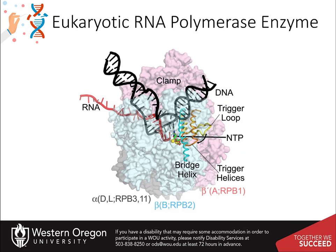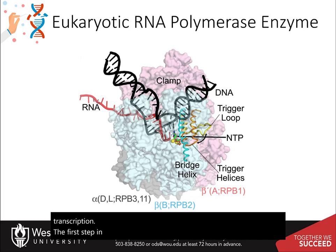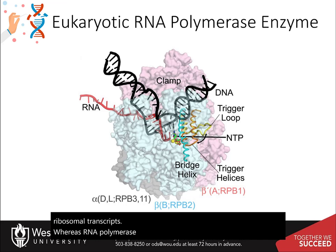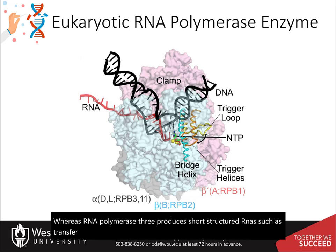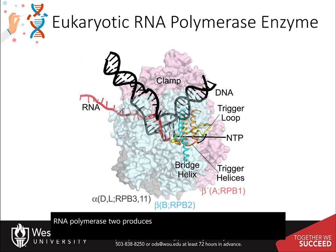In eukaryotic cells, three RNA polymerases share the task of transcription, the first step in gene expression. RNA polymerase one is responsible for the synthesis of the majority of ribosomal transcripts, whereas RNA polymerase three produces short structured RNAs such as transfer RNAs and the 5S ribosomal RNA. RNA polymerase two produces all messenger RNAs and most regulatory and untranslated RNAs.